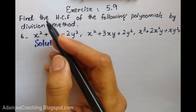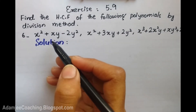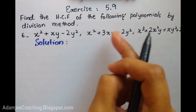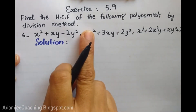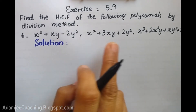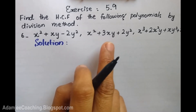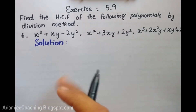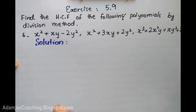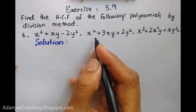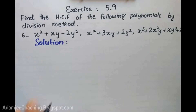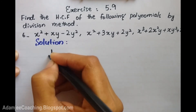Exercise 5.3, Question number 6: find the HCF of the following polynomials by division method. For the division method we have the first, second, and third polynomials. We put the bigger and smaller polynomials into the division box. First, we try to take common factors, but if none come out, we proceed directly to division.